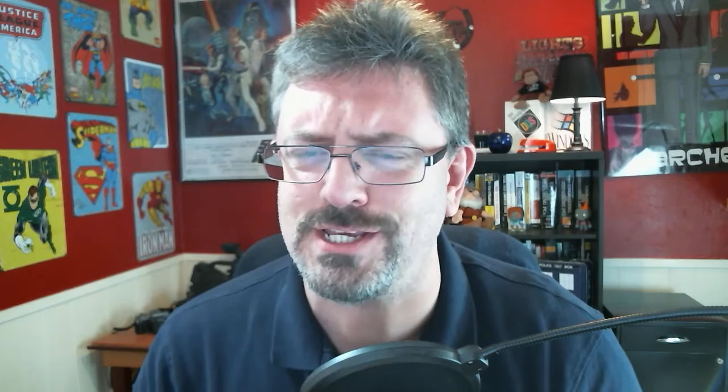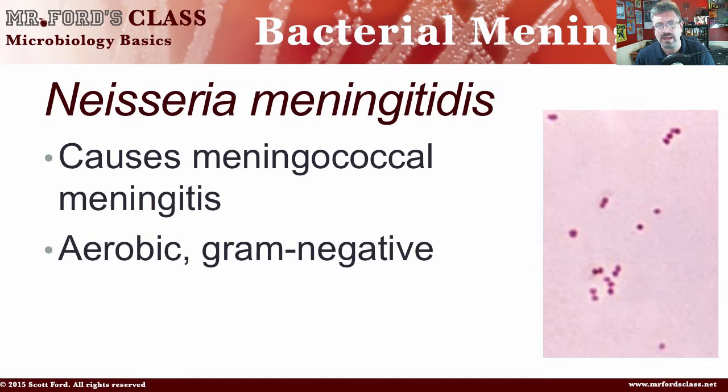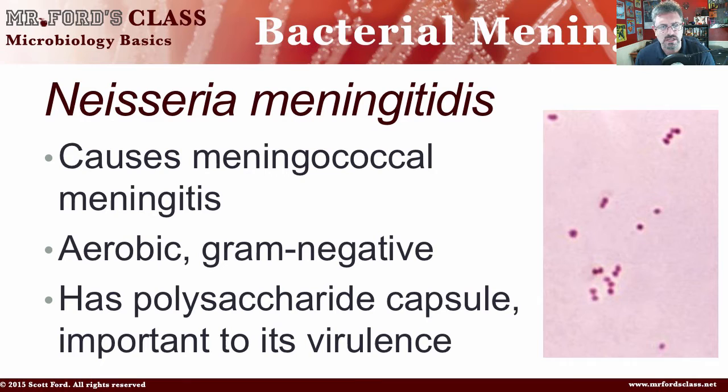Welcome back to yet more of our pleasant conversation about meningitis. In this episode, I want to take a look at Neisseria meningitis. This is caused by meningococcal meningitis — meningococcal is the culprit behind this type of bacterial meningitis. Meningococcal meningitis is an aerobic, meaning it requires oxygen, gram-negative bacteria, and it has a polysaccharide capsule, which is important to its virulence.